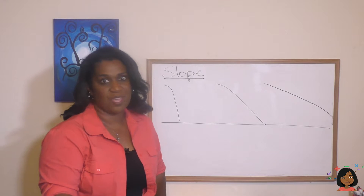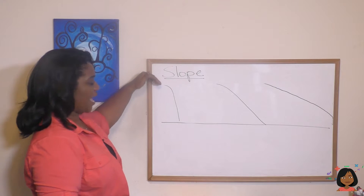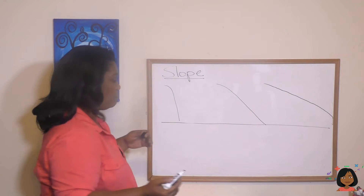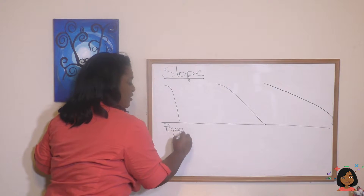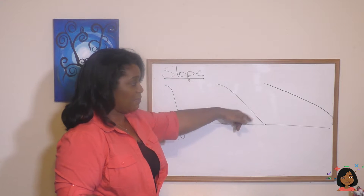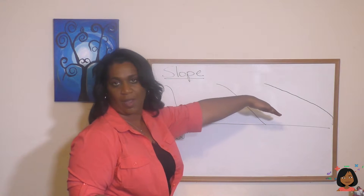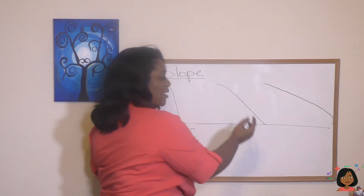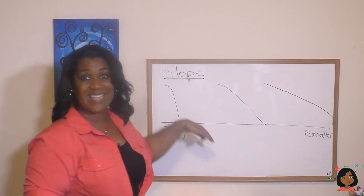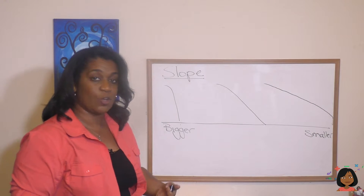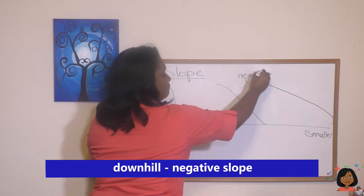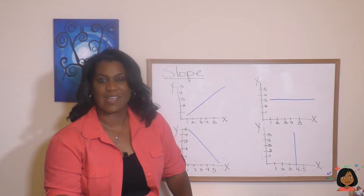The same thing applies going down the mountain. If it's very steep, that means the slope is big — it's a bigger slope when it's very steep. This one is not quite as steep, and the one over here is almost like you could just walk down without a problem, so that would be a smaller slope. And because we are going downhill, we call this slope negative.